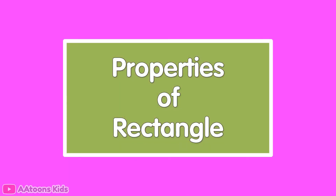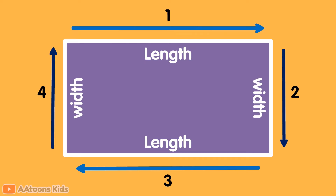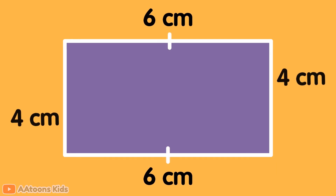Properties of Rectangle. A rectangle is a closed two-dimensional quadrilateral. It has four sides — two sides are called length and two sides are called width. One pair of sides is always longer than the other pair. The opposite sides of a rectangle are parallel and equal to each other.